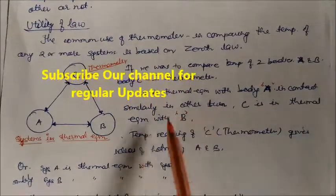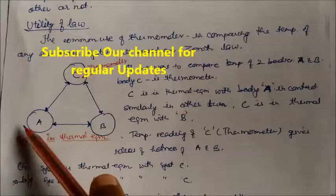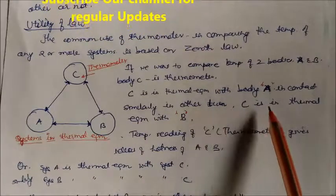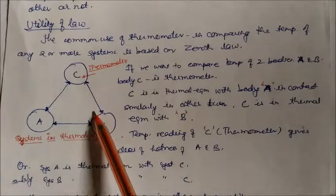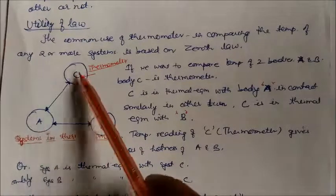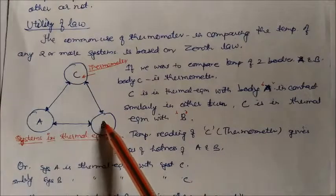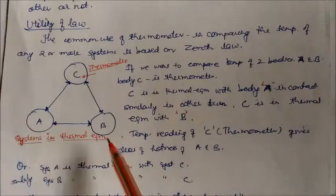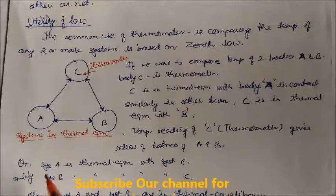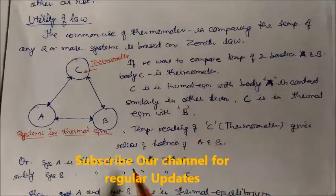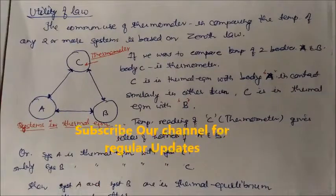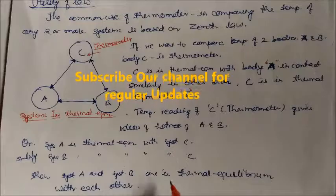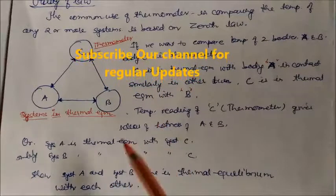C (the thermometer) is first brought into contact with body A and attains thermal equilibrium with it, then brought into contact with body B and attains the same temperature. If the temperature difference between the two readings is very small, A and B are in thermal equilibrium with each other. If system A is in thermal equilibrium with C, and system B is also in thermal equilibrium with C, then A and B are in thermal equilibrium with each other. This is the concept of the thermometer.